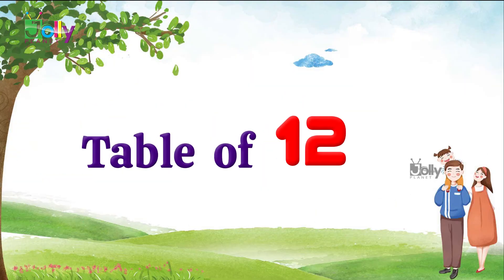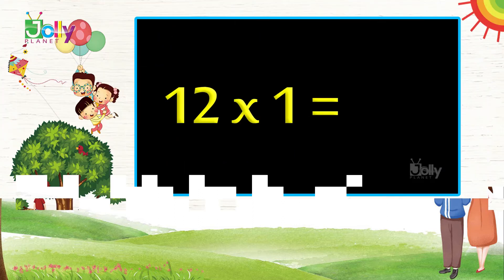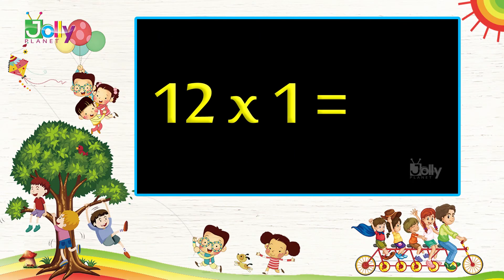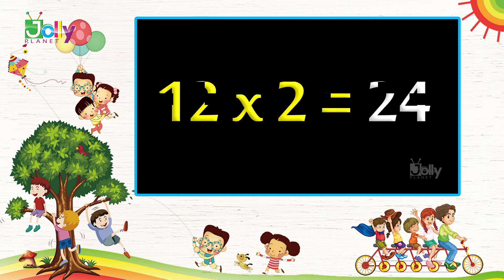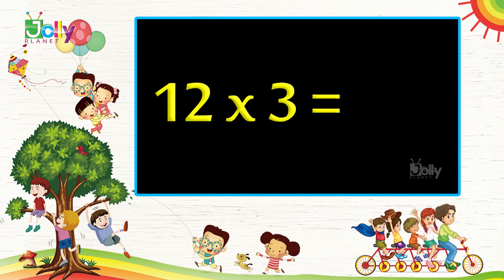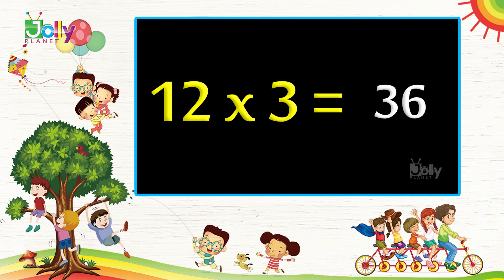Table of twelve. Twelve ones are twelve. Twelve twos are twenty-four. Twelve threes are thirty-six.